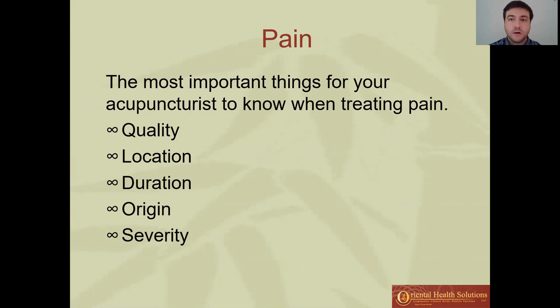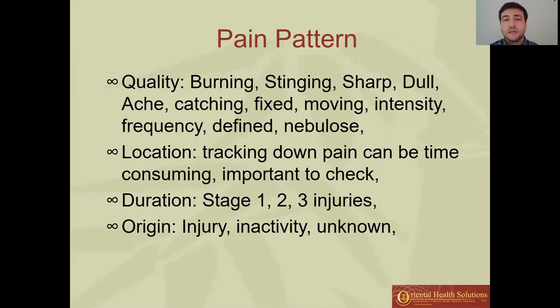The most important things to look for from a Chinese medicine perspective are: quality, location, duration, origin, and severity. The quality can be very diverse — burning, stinging, sharp, dull, achy, catching, impingement-type pain, fixed, moving, wandering, referred. How frequent is the pain? Is it every day, all the time, once a week, with certain activities? Is it a very defined pain right in one spot, or is it nebulous?